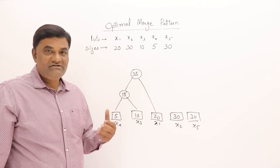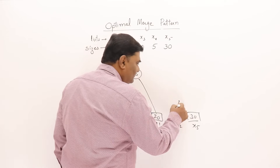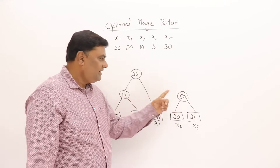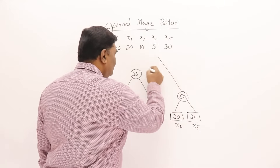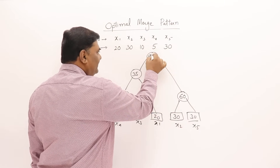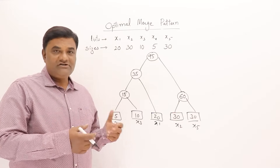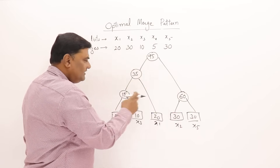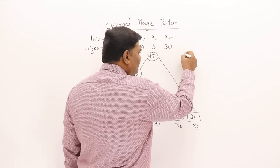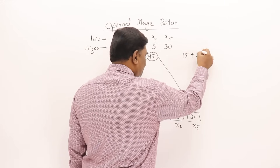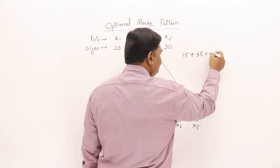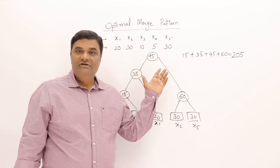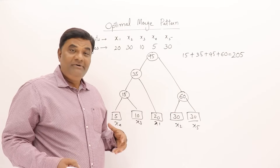After merging 15 and 20 we have 35. The remaining files are 35, 30, and 30. We select the smallest pair, 30 and 30, and merge them to get 60. Now we have 35 and 60, and we combine those to get a final list of 95 elements.